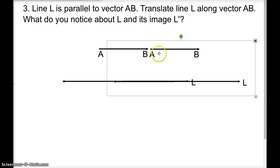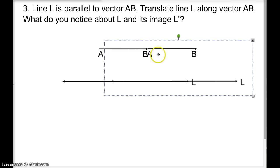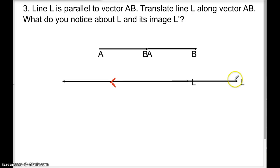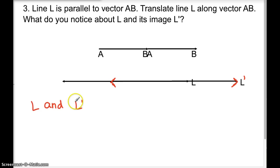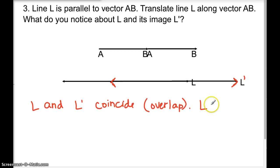Make sure there's no gap — the head of one vector lines up with the head of the other. You can see where the beginning and end of your new line are. Label it L prime — that's with an apostrophe. We notice that L and L prime coincide: they overlap, so L equals L prime.